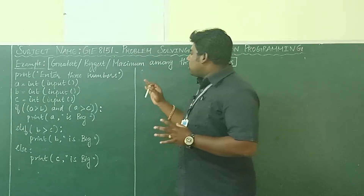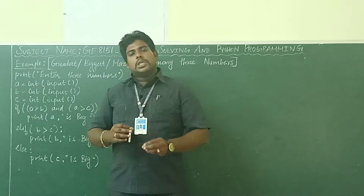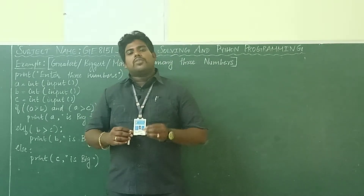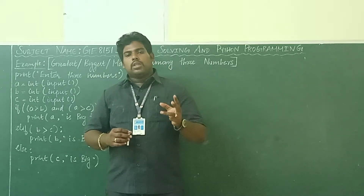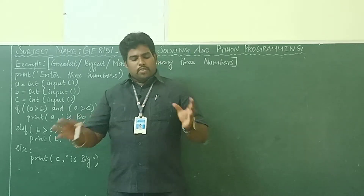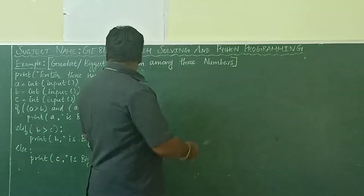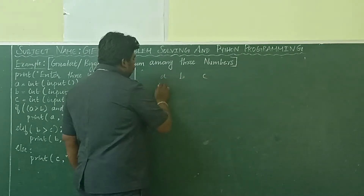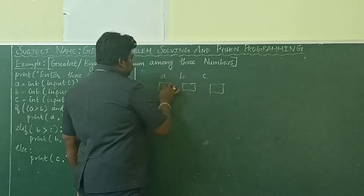The logic is you have to find the greatest among three numbers. So how many inputs are required? You are going to find the greatest among three numbers, so three inputs are required. Three variables are required and three inputs are required. First get the three inputs — for example, A, B, C — get three variables and three inputs.